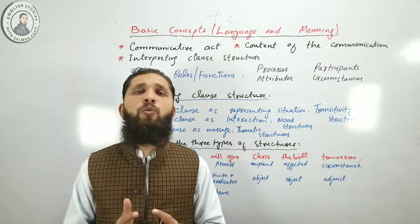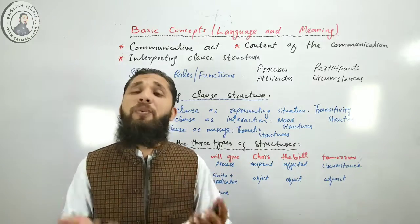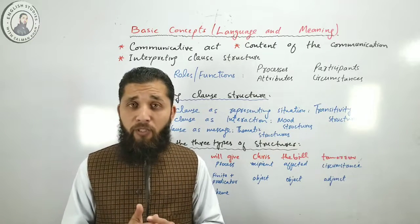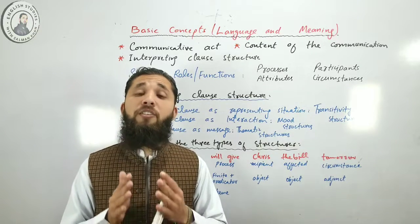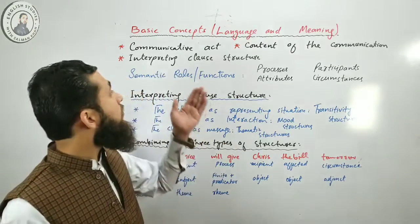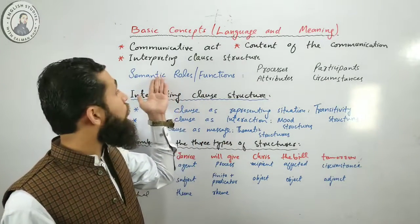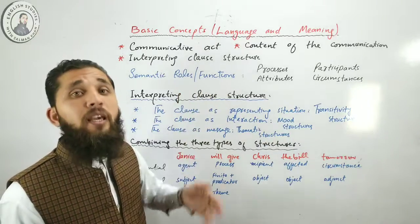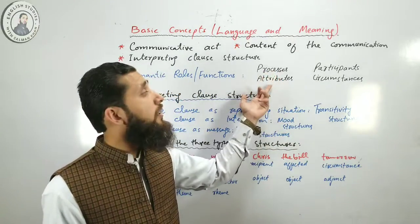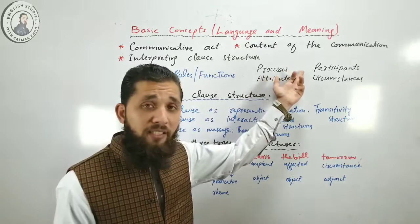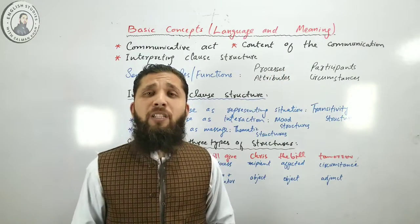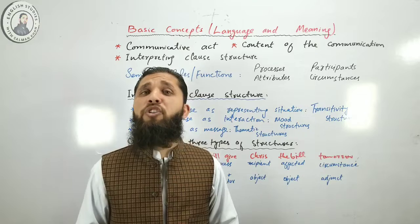Extralinguistic reality is experience that cannot be expressed through words. The components of this conceptualization of reality are known as semantic roles or semantic functions, and they are: processes, attributes, participants, and circumstances.